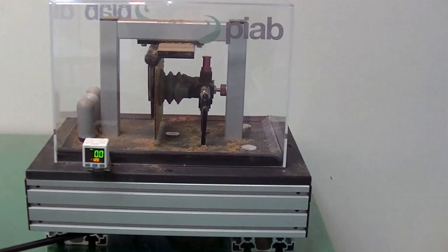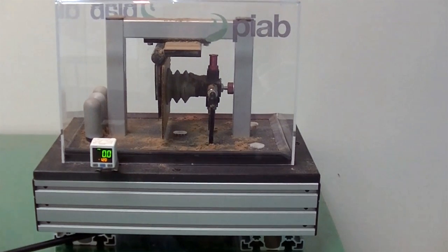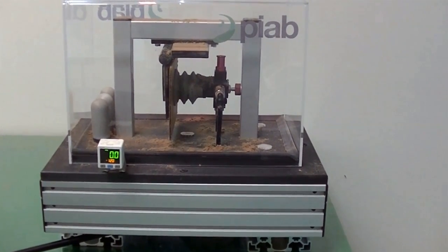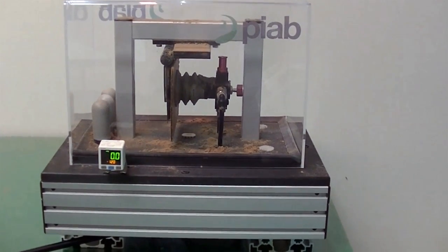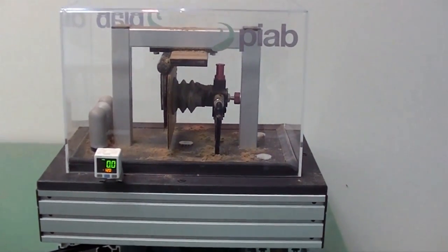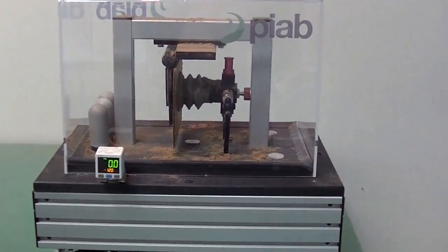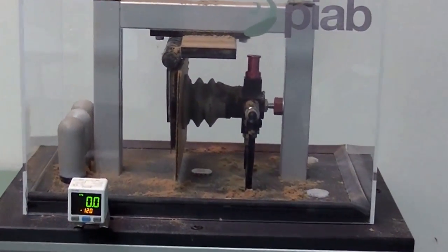In this demo, we are simulating a dusty, dirty environment to show Piab's new innovative DI16-2 dustproof coax cartridge can handle corrugated board in the roughest of settings.